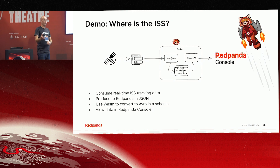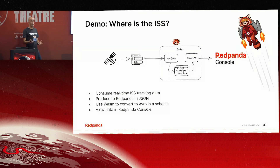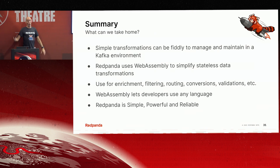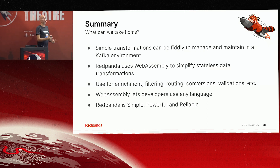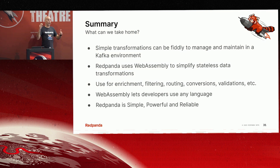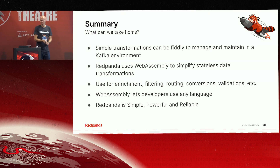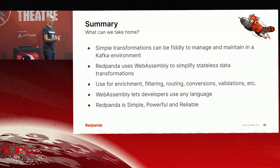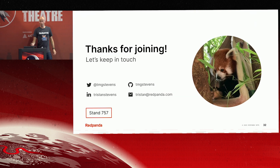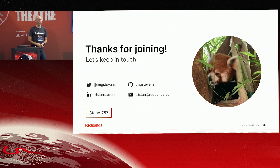Of course we can make this more complicated — as we decide we want the other telemetry from the space station, we can swap that in and evolve the schema as we go. That's the benefit of doing Avro with stateless transforms in Red Panda. Key takeaways: simple transformations in Kafka can actually be really difficult and add a load of complexity and operational nightmare. With Red Panda, we can use WebAssembly for enrichment, filtering, routing, conversions, or validations — pretty much anything you want. WebAssembly is, in my opinion, the future of serverless, and it means you can use any language to compile and run transforms in Red Panda. Red Panda itself is simple, powerful, reliable, and cost effective. We're at booth 757 — come and chat. Thank you very much.